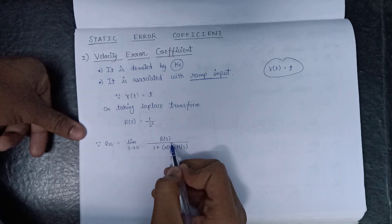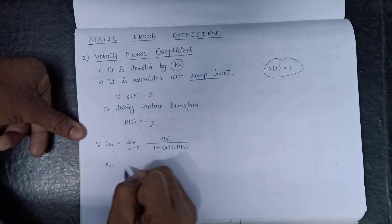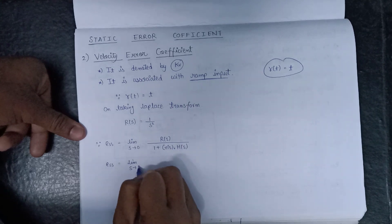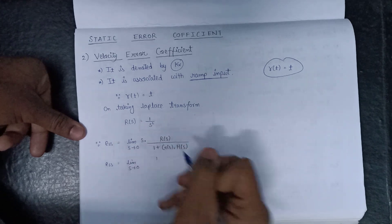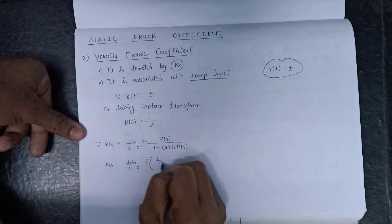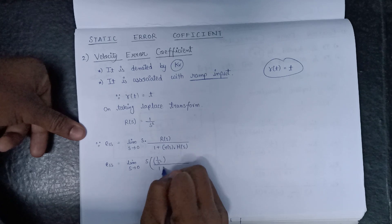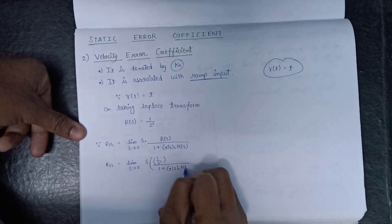On putting the value of R(s) in this equation, we get steady state error as E(s) is equal to limit s tends to 0 multiplied with R(s) into 1 over s square whole divided by 1 plus G(s) into H(s).